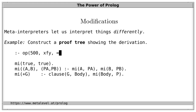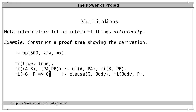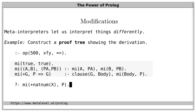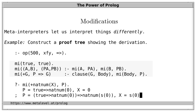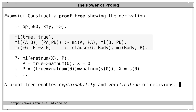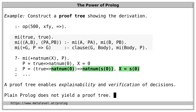If PA and PB are the proof trees showing how A and B can be derived, then the proof tree of the conjunction is the concatenation of these proof trees using an and-list. If the body of a clause can be proven with proof P, we denote the proof of goal G as 'P => G'. When we ask: is there a natural number X with proof P? We get solutions together with proofs. That's nice because a proof tree is good for explainability and verification. Even though plain Prolog does not yield a proof tree, the meta-interpreter does — that's an example of how easily we can extend Prolog with features we're interested in.